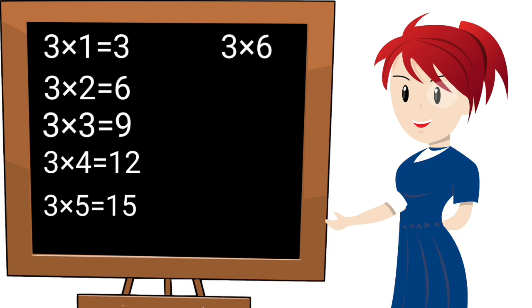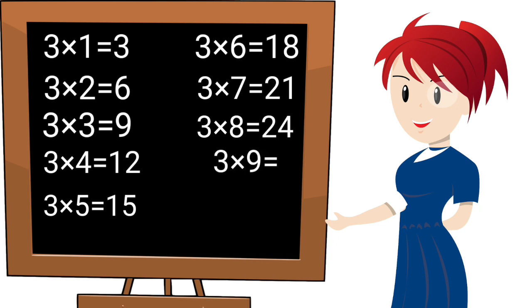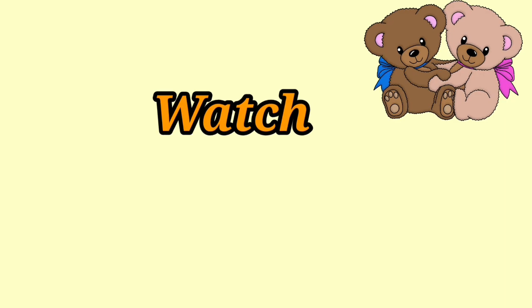3 sixes are 18. 3 sevens are 21. 3 eights are 24. 3 nines are 27. 3 tens are 30.